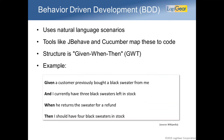Now let's look at behavior-driven development. In BDD you make scenarios using GWT — Given, When, Then. It's a strict but very natural language format. For example: given a customer previously bought a black sweater and I currently have three left in stock, when he returns it, then I should have four black sweaters in stock. That is easy to understand for a domain expert, an end user, and developers can use it to develop their systems.